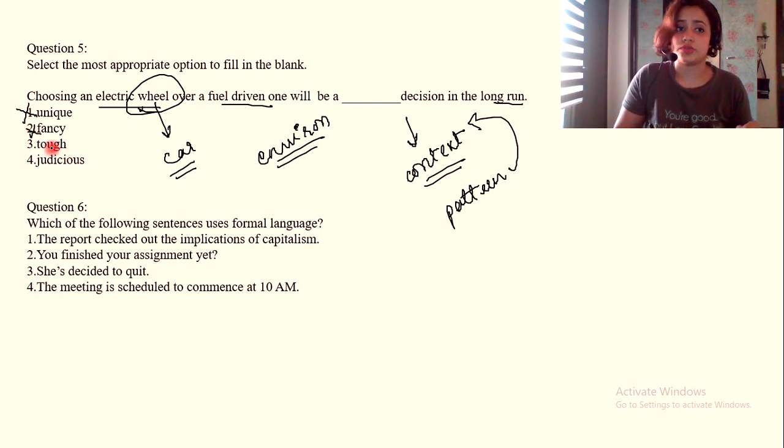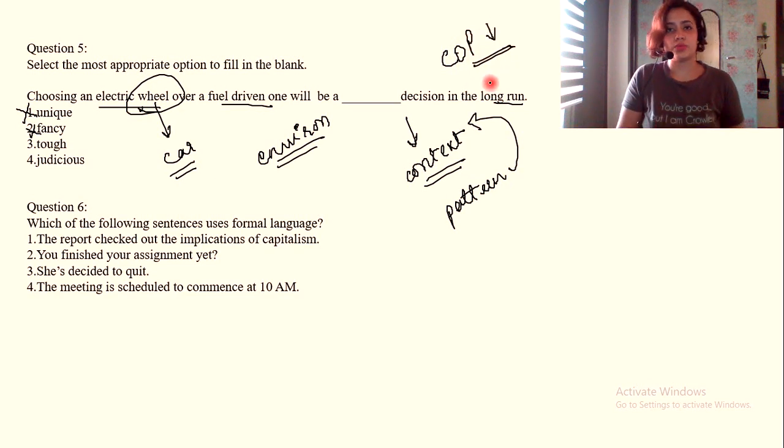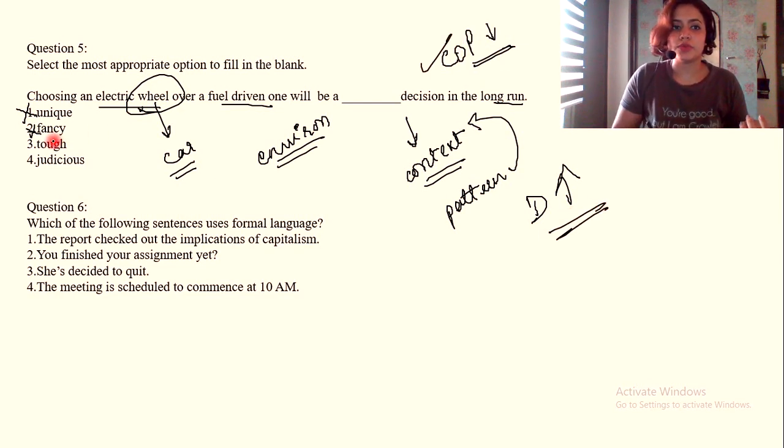Unique decision? Not unique. It might be unique right now because not a lot of people are buying it, but not in the long run. Fancy? Not at all. Tough? Why would it be tough in the long run? When demand rises over time, cost of production will significantly come down.